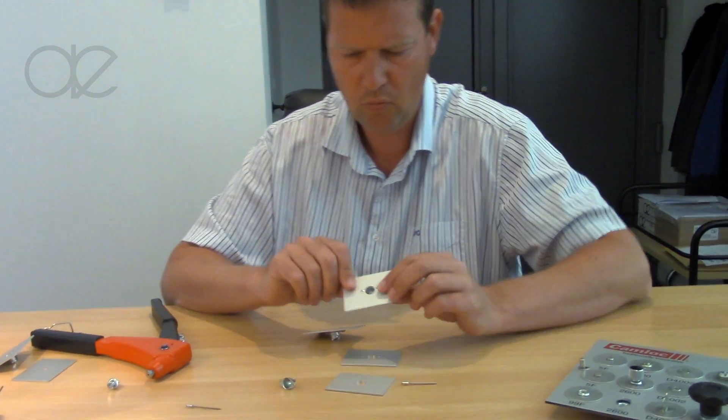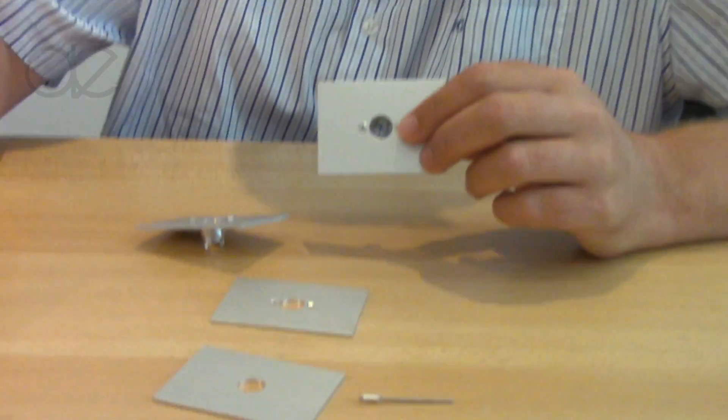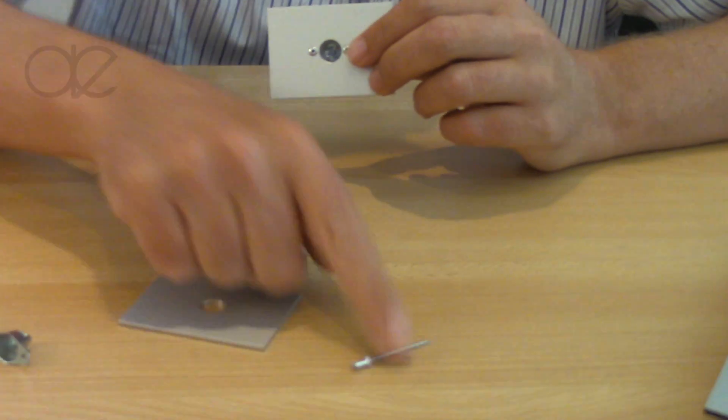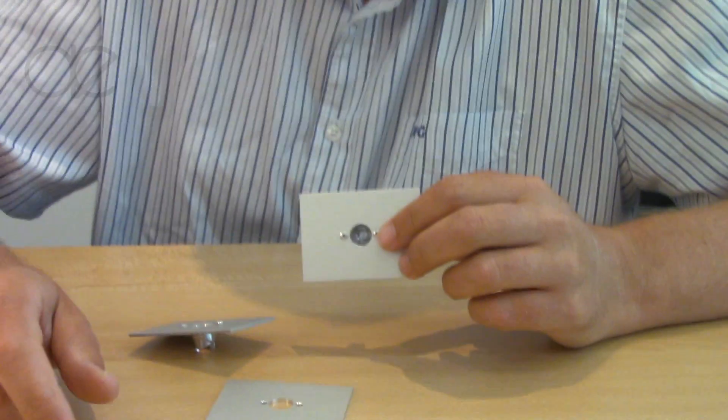You want rivets with the same material. This is a zinc plated receptacle and this is a zinc rivet. Now if you have a stainless steel receptacle, then you should order stainless steel rivets.